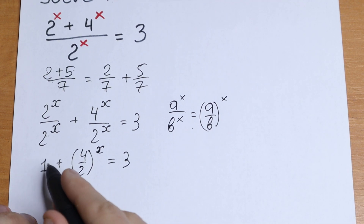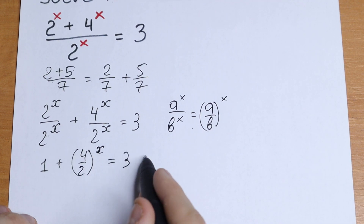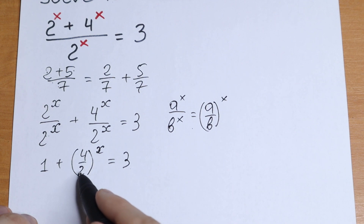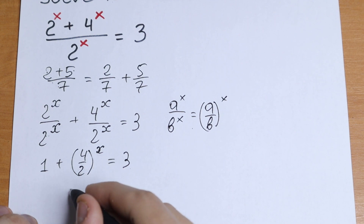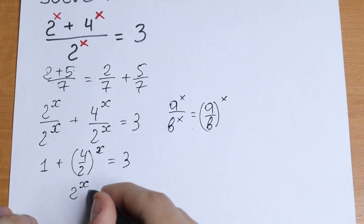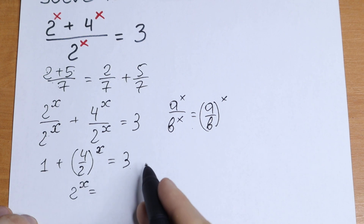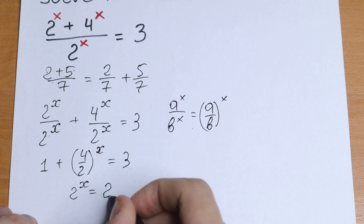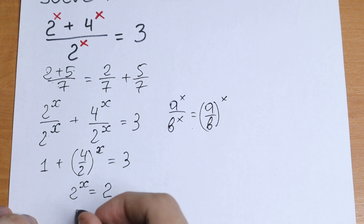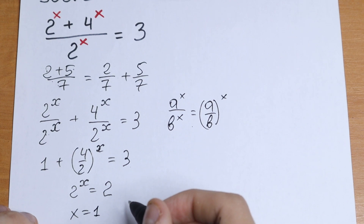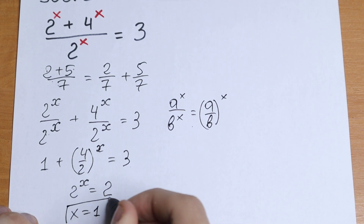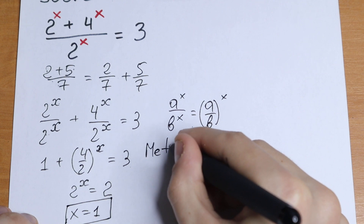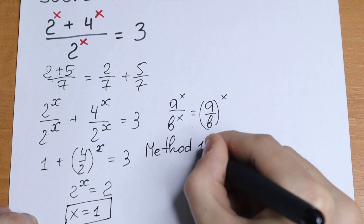Let's simplify. We bring the 1 to the right side, and 4 divided by 2 gives us 2. So we have 2 to the power x equal to 3 minus 1, which is 2. Therefore x equals 1, and this is our root. This is the first method.